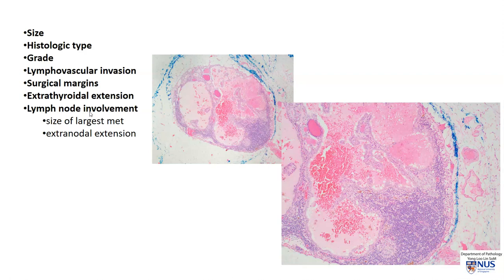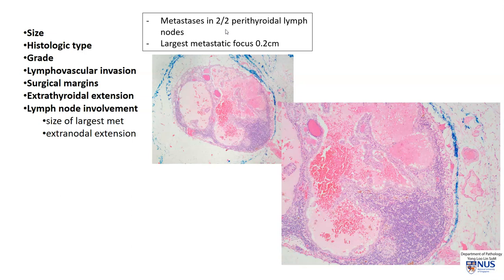The last thing we want to look at is whether or not there is lymph node involvement. This depends on whether the clinician excises additional lymph nodes in the lymph node dissection, or sometimes we can find perithyroidal lymph nodes when we examine the thyroid itself. In this instance, there were actually metastases in two out of two perithyroidal lymph nodes. Here is an example of a lymph node within the perithyroidal fat, and we can see a metastatic deposit measuring 0.2 centimeters. We would measure the largest metastatic focus. The metastasis is cystic, which is very common in metastatic papillary thyroid carcinoma. A higher magnification view shows the papillary structures and the lymph node parenchyma, with no evidence of extra-nodal involvement.